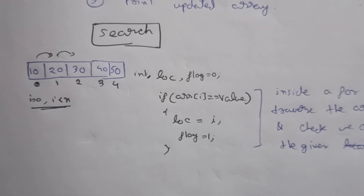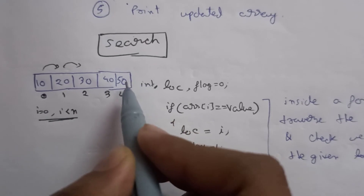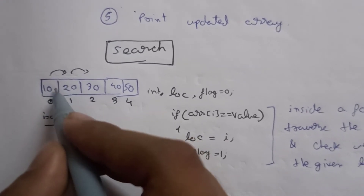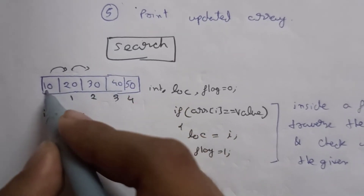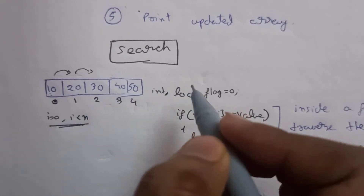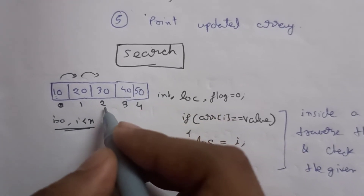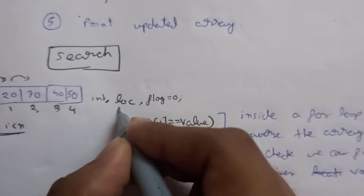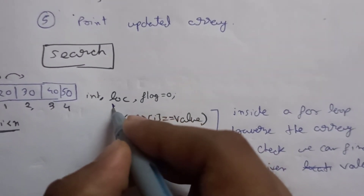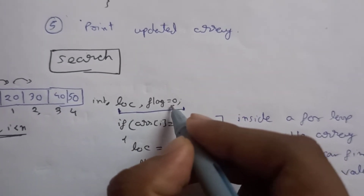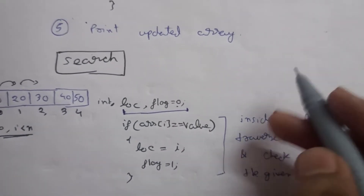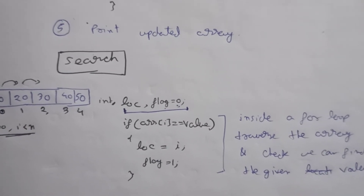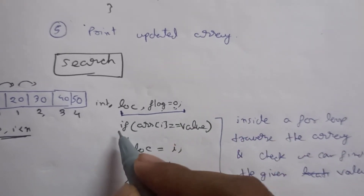Now let's look at how to search if an element is present in an array. Using the same array 10, 20, 30, 40, 50, we check every element one by one. If the value is not found, we print an error message. If it is found, we store the index in a location variable and print the location. We use two new variables: location and flag. The flag is initialized to zero, and set to one when the value is found.